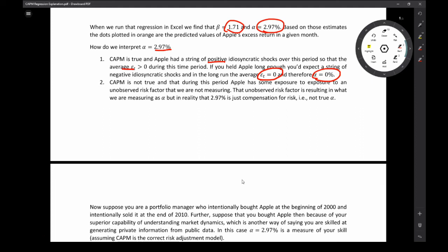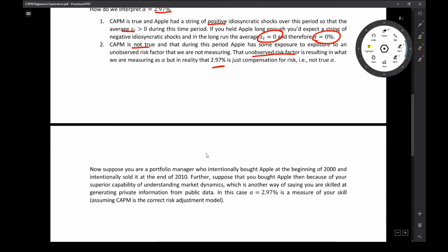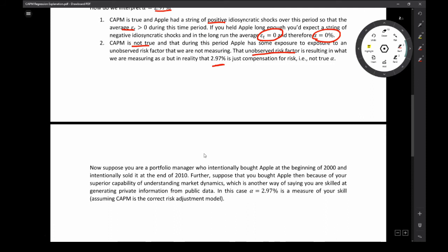Now, we know that CAPM isn't a particularly good model. This is why we have all those multi-factor models. So another way to interpret that alpha is to say that suppose CAPM isn't true. We could interpret that alpha as some unobserved risk factor. So there's some risk factor out there that Apple has exposure to. Now, if we don't measure that risk factor, then it's going to look like Apple is having higher expected returns than the systematic risk dictates. But it's really just compensation for risk. This 2.97 that we're calculating is just compensation for some risk that we don't measure.